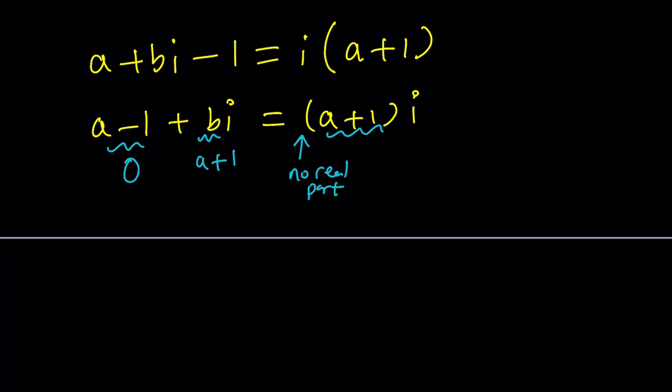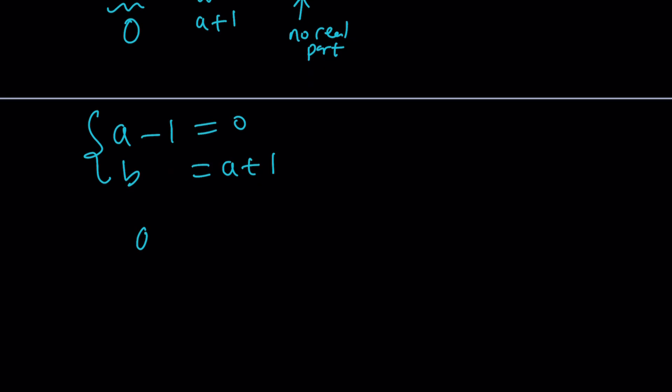We got ourselves a system, but this system is very easy to solve. A minus 1 equals 0 and B equals A plus 1. From the first equation we get A equals 1, and the second equation gives us B equals 2, because B is supposed to be 1 more than A.